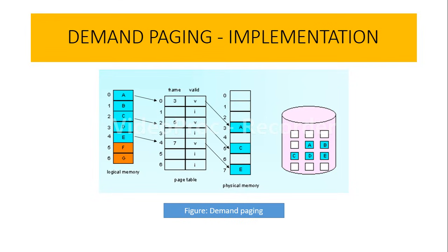The entry bit for pages loaded into physical memory is set to V, meaning valid. The entry bit for pages not currently in memory is marked I, meaning invalid. In the page table, V entries correspond to pages loaded in physical memory, while I entries are pages still residing on the disk. Whenever a process tries to access a page marked I — one not swapped into main memory — it causes a page fault.